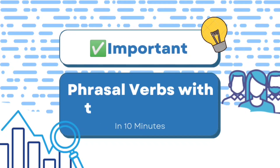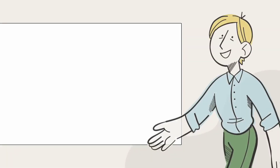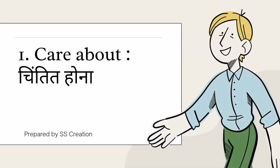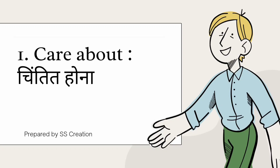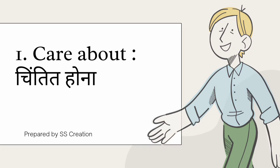Important Phrasal Verbs with their meanings. Part 2. Now start this video. First one is 'Care About' — meaning: Chintit Hona.